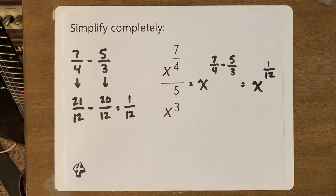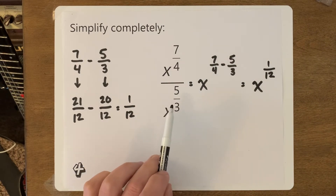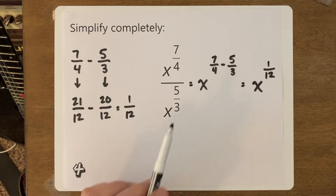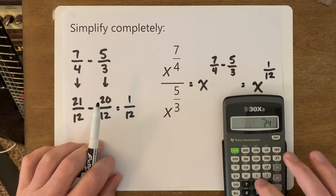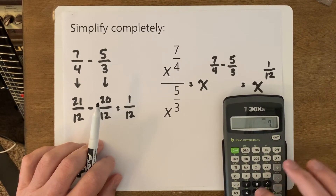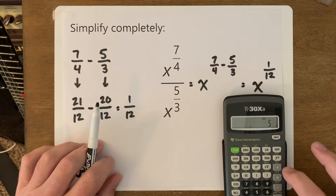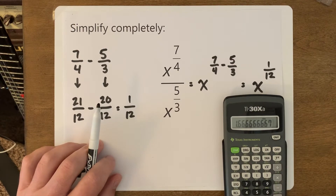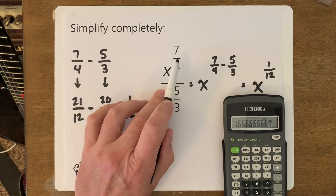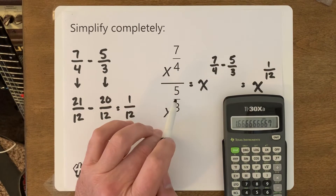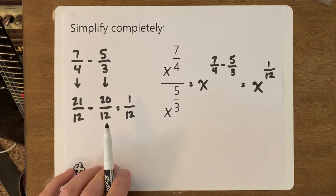That makes sense because 7 over 4 is slightly bigger than 5 over 3. We can show that with a calculator: 7 divided by 4 is 1.75, and 5 divided by 3 is 1.6 repeating. So this fraction is definitely a little bit bigger than that one, and the difference is 1 over 12.